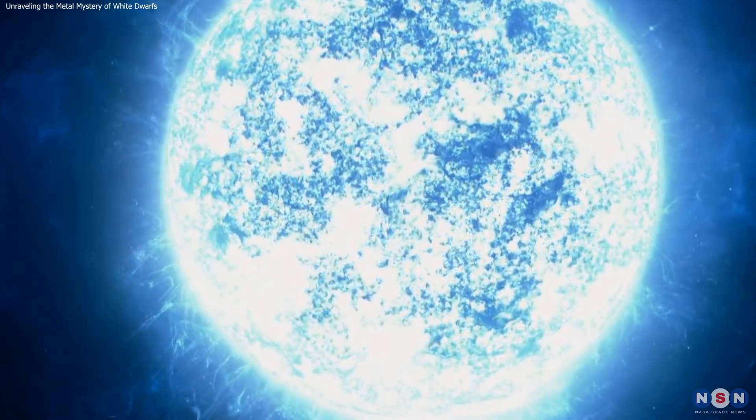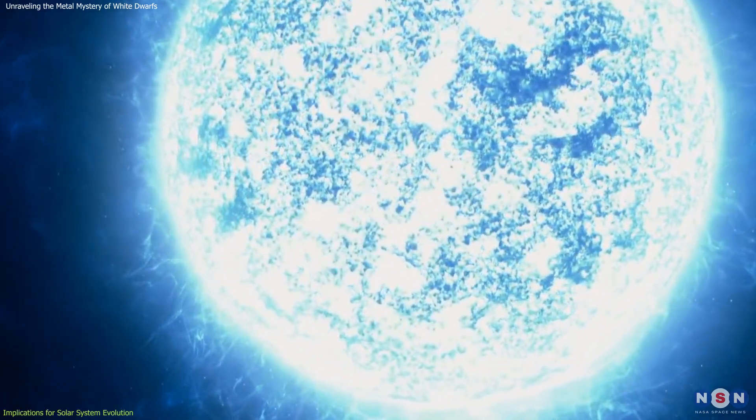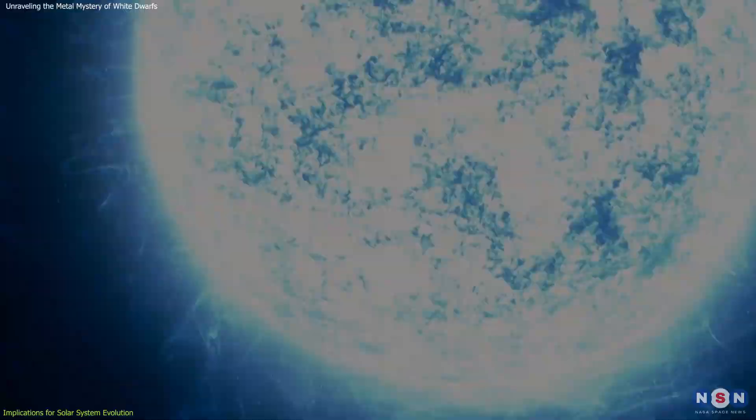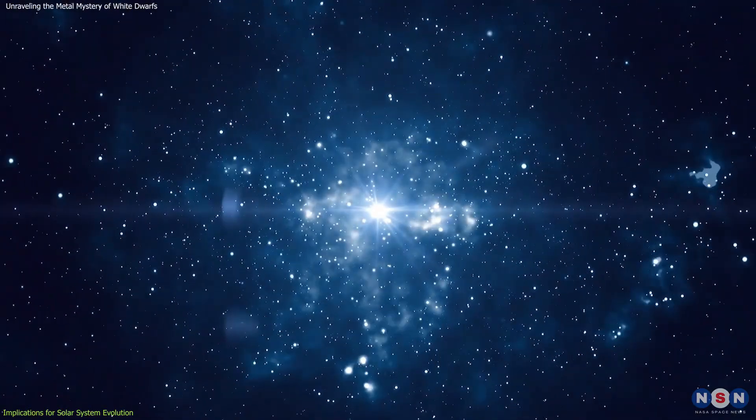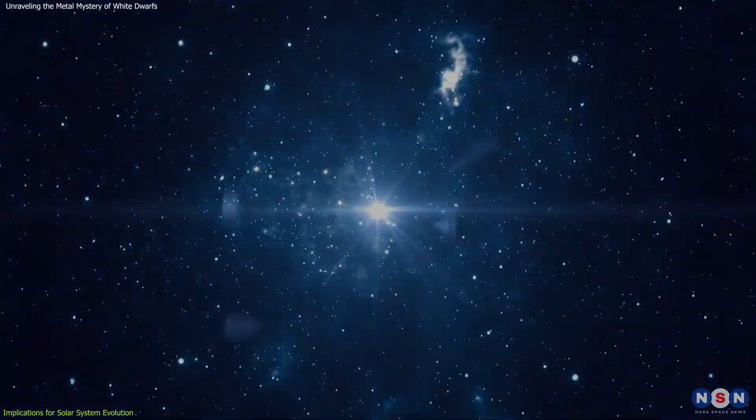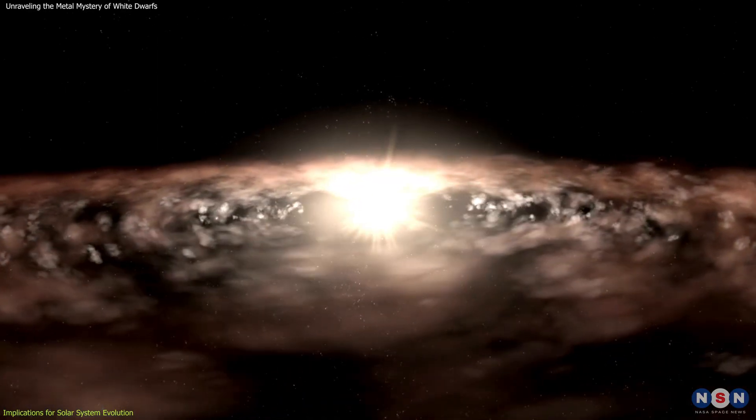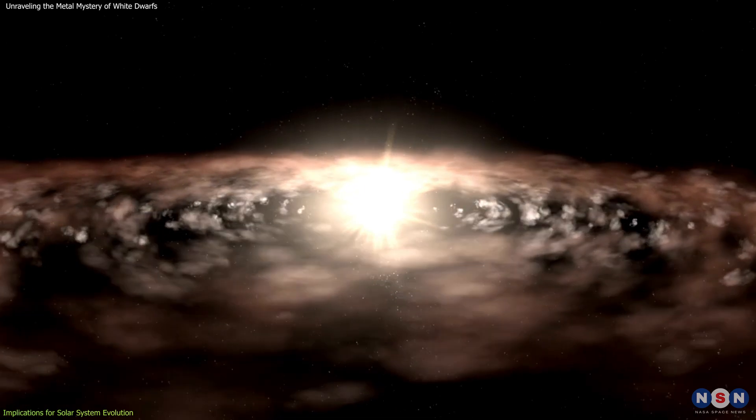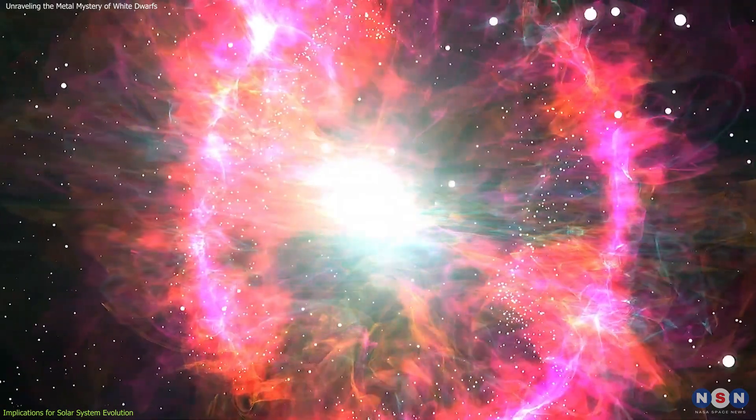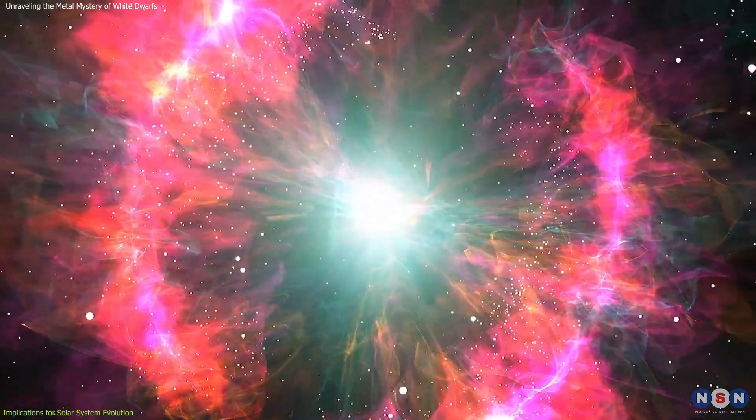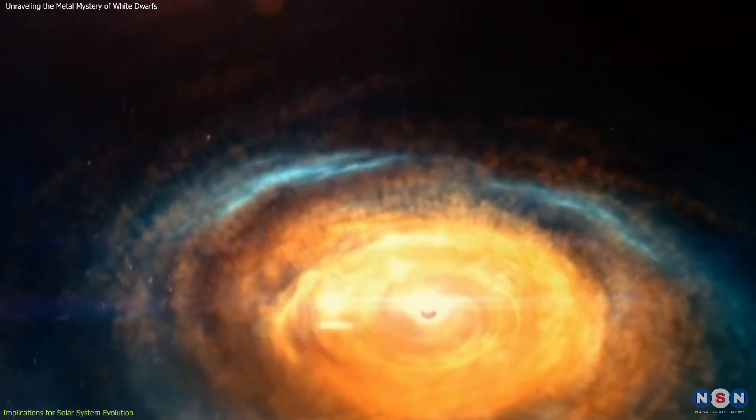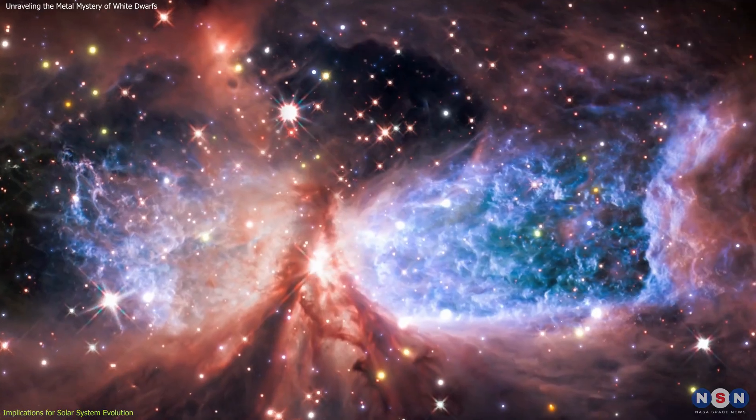The processes observed in the vicinity of white dwarfs are not isolated events, but are indicative of universal principles that apply to many, if not all, stellar remnants. The accretion of material by white dwarfs, driven by their gravitational pull, can significantly alter the chemical and physical landscape of surrounding space. This recycling of material is a key component of the galactic ecosystem...